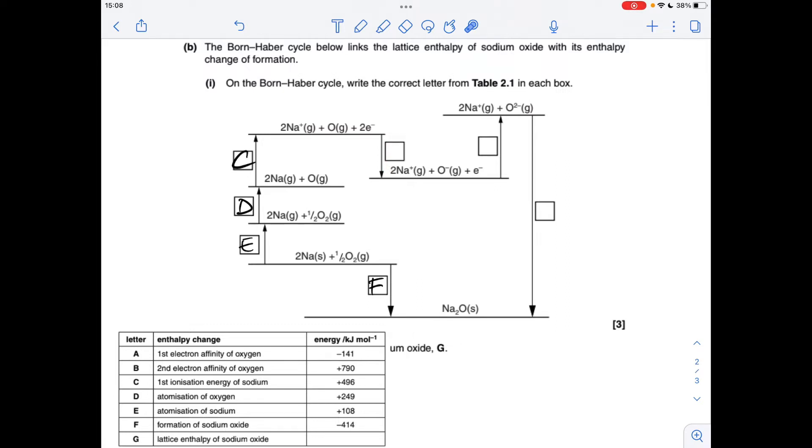This one here we're taking one of these electrons and putting it onto the gaseous oxygen atom to generate a gaseous oxygen 1- ion, so that's the first electron affinity of oxygen which is A. So this step here is the second electron going on to the O- ion going to O2-, so that's the second electron affinity of oxygen, so that's option B.